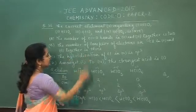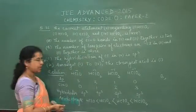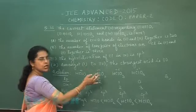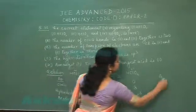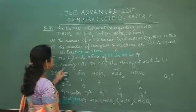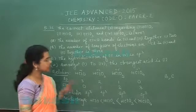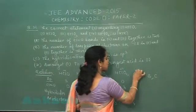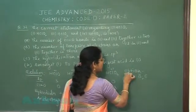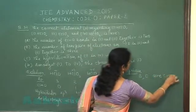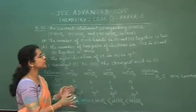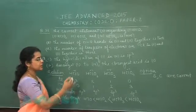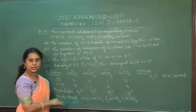Statement 3: the hybridization of chlorine in HClO₄ is SP³. Since all four oxo acids have SP³ hybridization on chlorine, this statement is also correct. Statement 4: among all four, the strongest acid is HClO — this is incorrect, as HClO is the weakest acid. Therefore, both option B and option C are the correct answers. Statements can be related to the structures of these oxo acids.